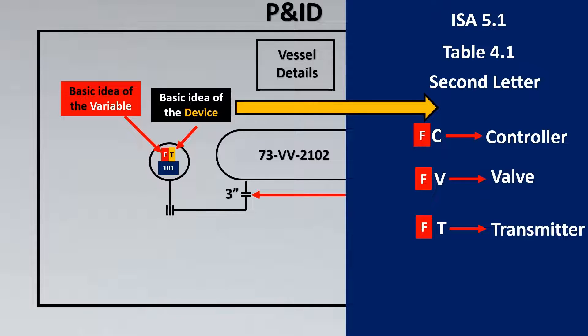Had it been level transmitter would have been LT. Similarly FI would have been flow indicator. Now sometimes it's a combination like FIT which is flow indicator transmitter, so it has the indication function also and the transmitter function also.